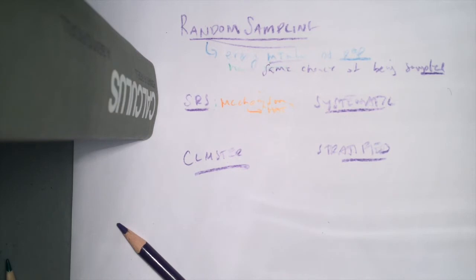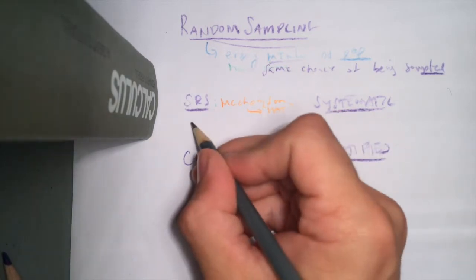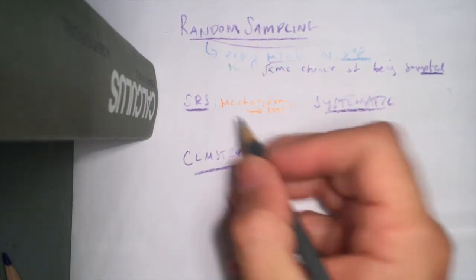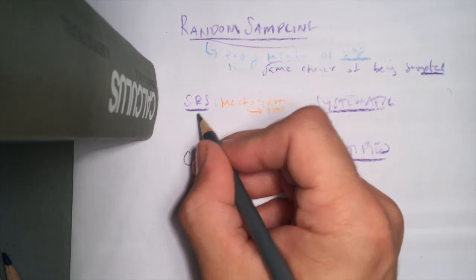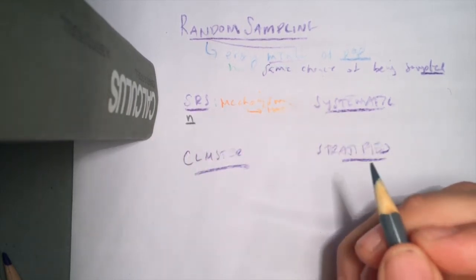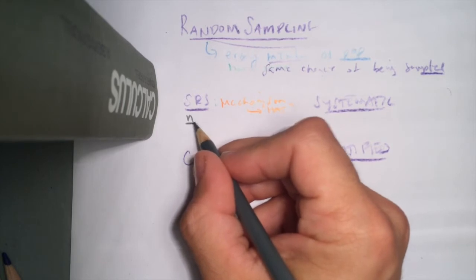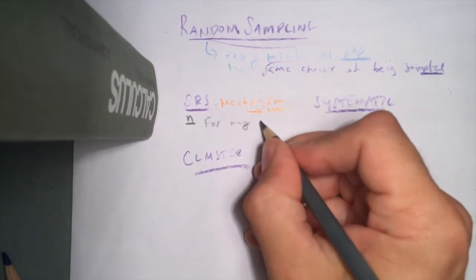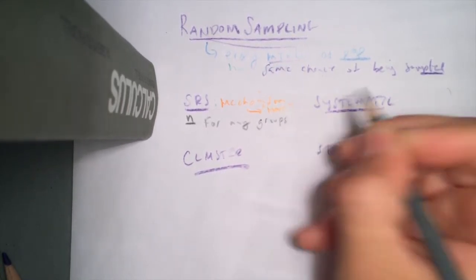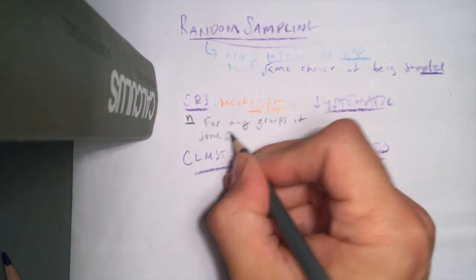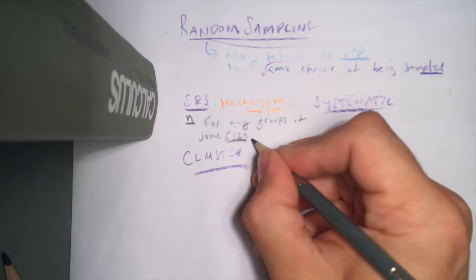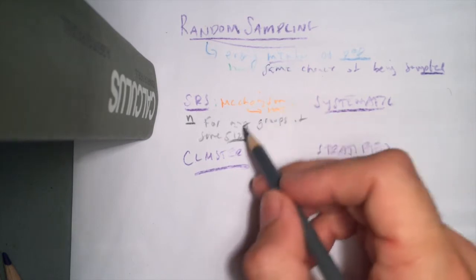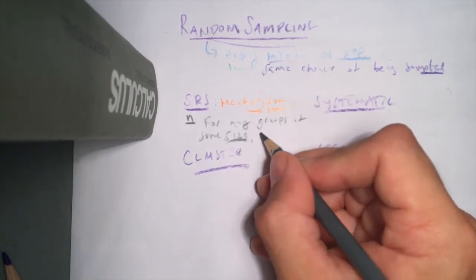What is the definition of a simple random sample? It is simply that every single sample of the same size has the same chance of being selected. Using n to stand for the sample size, for any groups of the same size n, they all have the same chance of being selected. So instead of just saying every individual has the same chance, we're saying every group of the same size has the same chance of being selected.